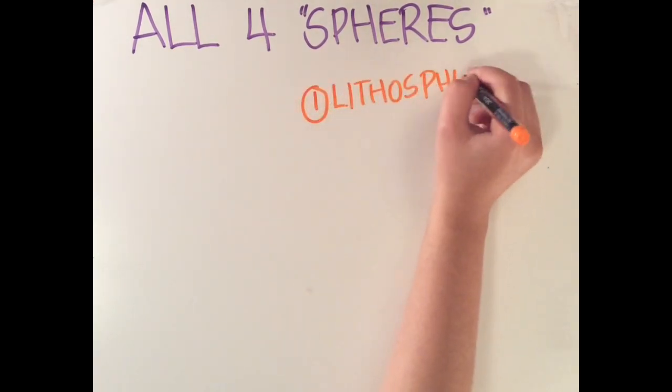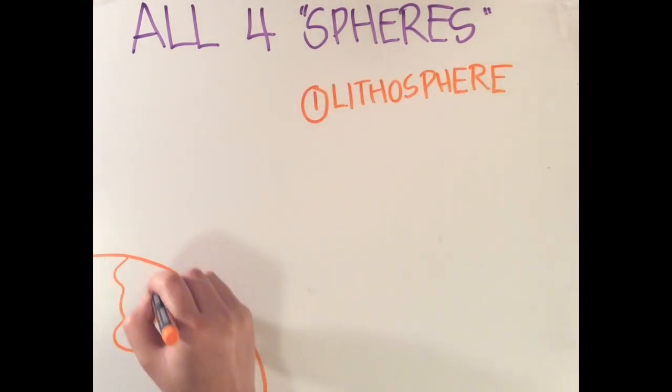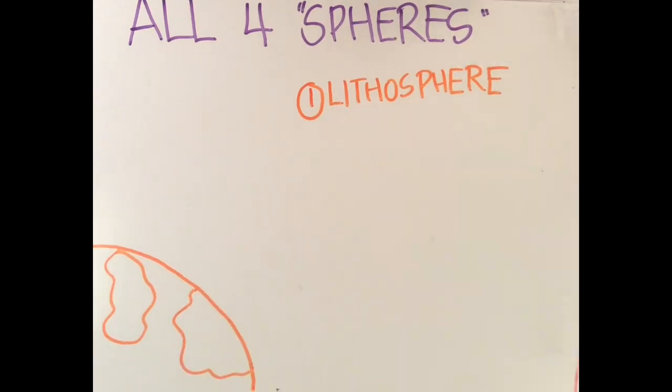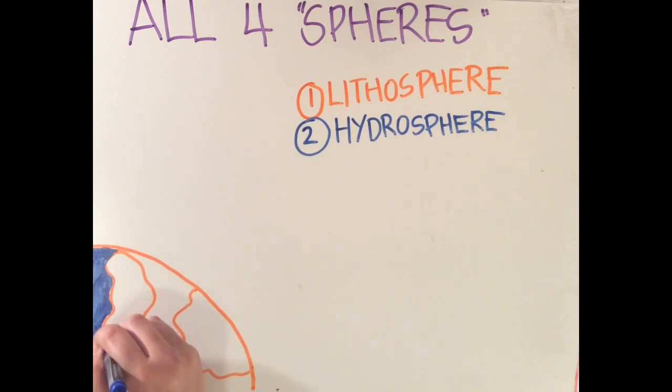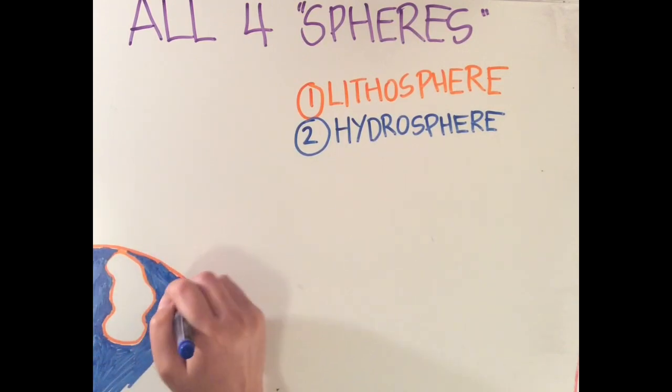The lithosphere is the crust of the Earth. Its study includes analysis of terrain and plate tectonics. The hydrosphere is comprised of all the water on the planet. This includes the study of river movements, oceanic cycles,